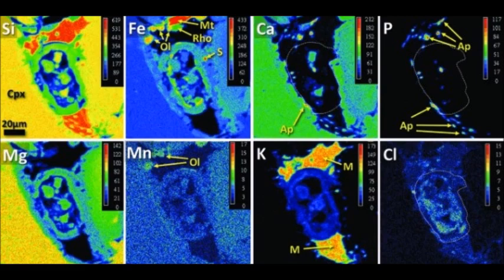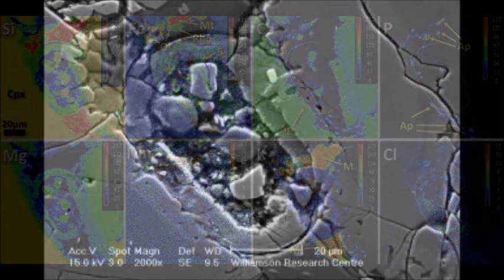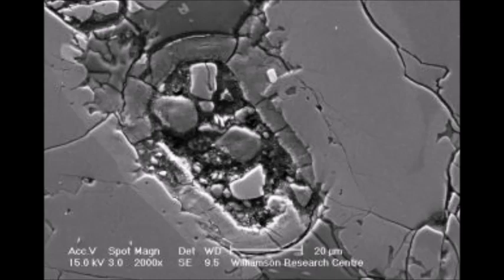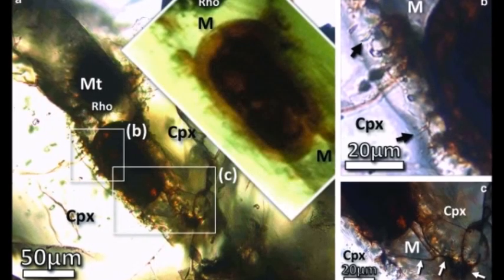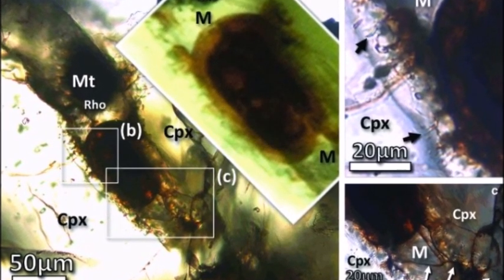According to specialists, this strange object resembles a biological cell fossilized on Earth, but clearly occurred in a Martian rock, so the biological cell or capsule would have developed in the lands of the Red Planet.